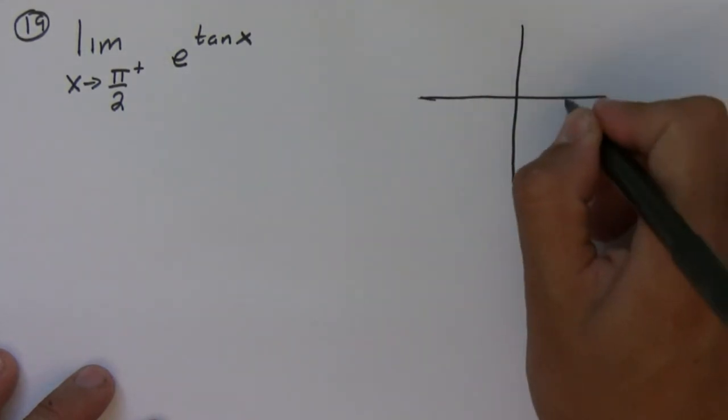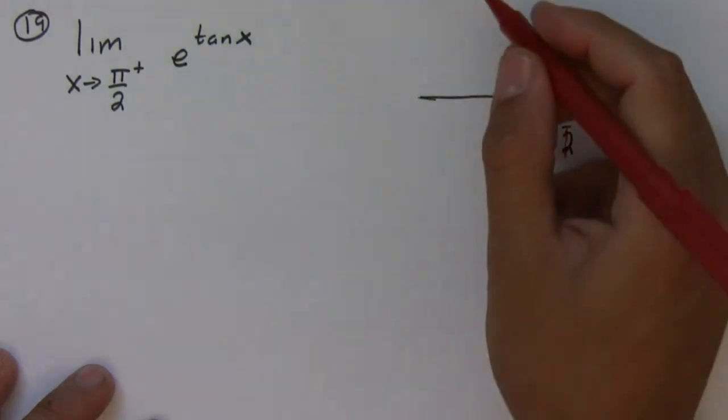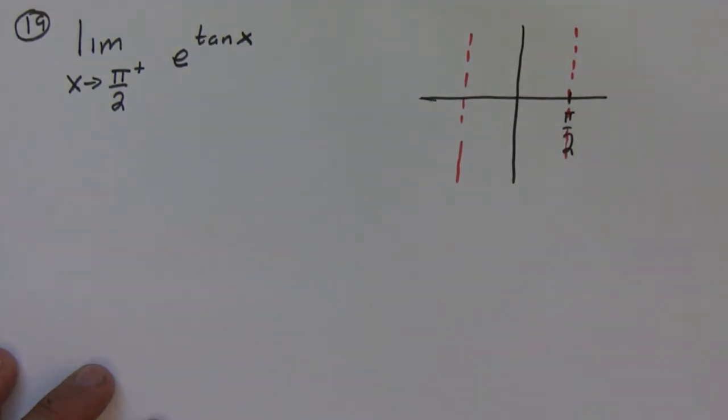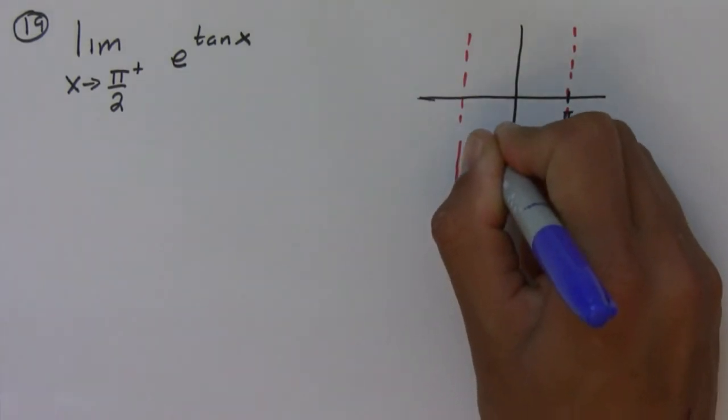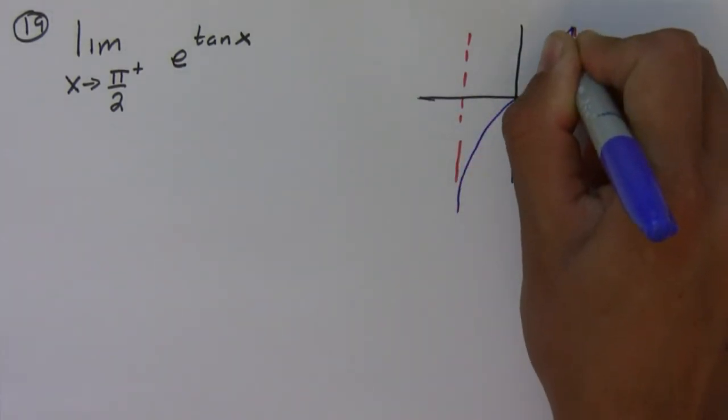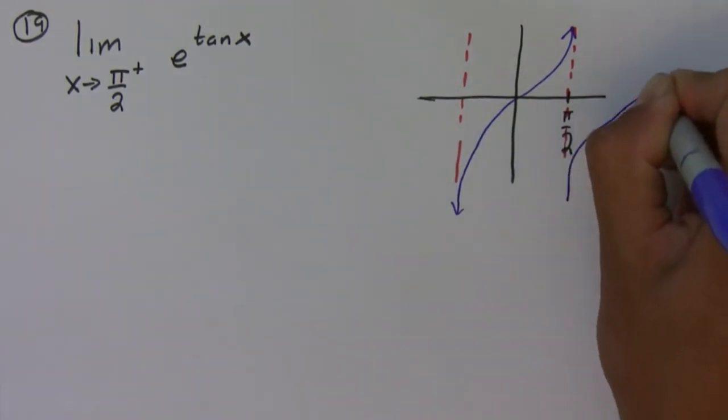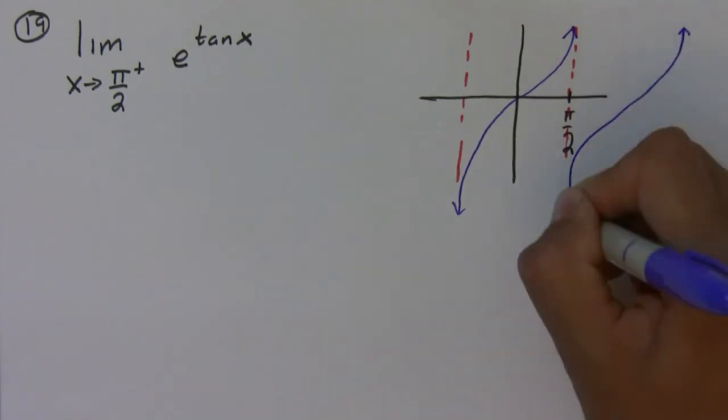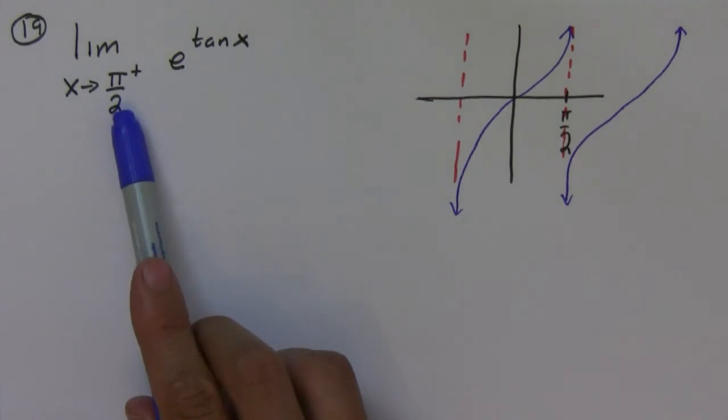So if I draw a quick sketch of tangent, this is π over two, negative π over two. So tangent looks something like this, and then it repeats itself to the next vertical asymptote.